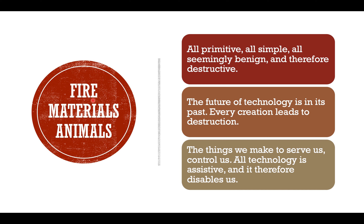Putting fire, materialism, and animals together — what are we really saying about Part 1 of Fahrenheit 451? All three are primitive, seemingly simple and benign, and that is exactly what makes them destructive. Technology always seems entirely good, yet it isn't. The future of technology is always in its past, because every creation leads to eventual destruction. The things we make to serve us eventually control us, because technology is assistive — and because it assists us, it disables us, making us dependent on it.